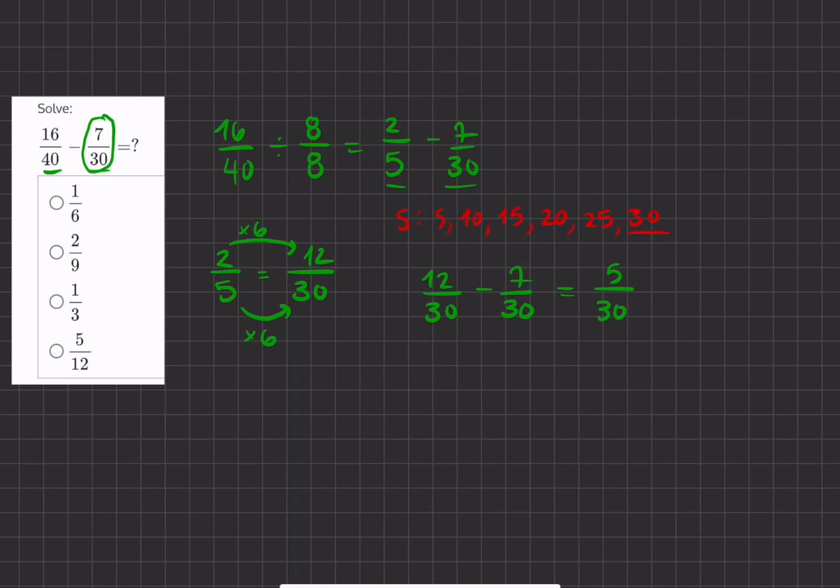This fraction is still not in its simplest form. We still have to divide the numerator and denominator by 5 because 5 divides both 5 and 30, and we get 1 over 6. So 1 sixth is our final simplified answer.